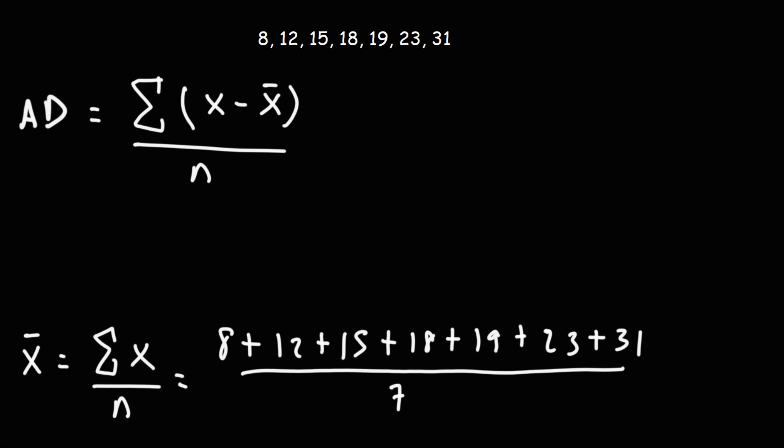8 plus 12 is 20, plus 15 is 35, plus 18 is 53, plus 19 is 72, plus 23 is 95, plus 31 is a total of 126. Now we're going to take that sum divided by the number of numbers that we have, which is 7, and we get 18. So now we have x bar, the arithmetic mean.